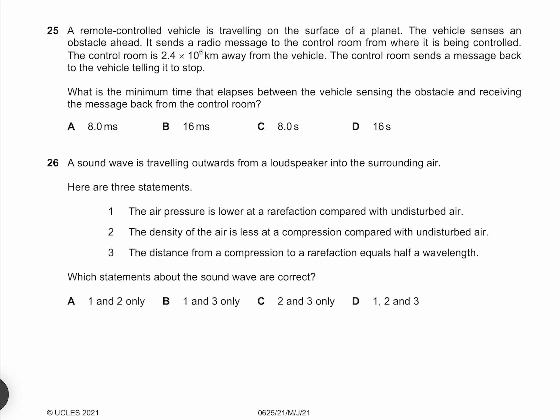A remote controlled vehicle is traveling on the surface of a planet. The vehicle senses an obstacle ahead. It sends a radio message to the control room from where it is being controlled. The control room is 2.4 times 10 to the 6 kilometers away from the vehicle. The control room sends a message back to the vehicle telling it to stop. What is the minimum time that elapses between the vehicle sensing the obstacle and receiving the message back from the control room? The distance that our signal is going to travel is going to be 2 times at 2.4 times 10 to the 6 kilometers, which gives me 4.8 times 10 to the 6 kilometers. Because we have a radio wave, our velocity is going to be the speed of light 3 times 10 to the 5 kilometers per second. Because velocity is distance over time, time is going to be distance divided by velocity, which gives us 16 seconds. So our answer is D.